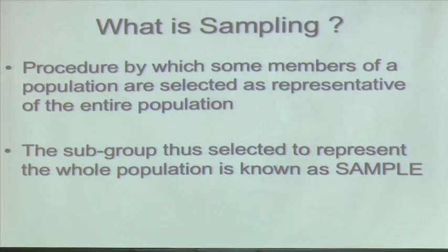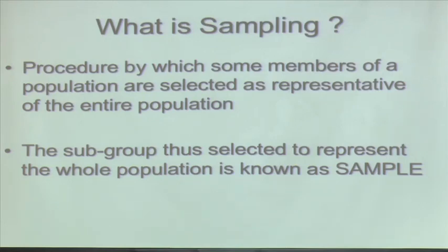Similarly, when you need 1 gram of sample through which you will do the analysis — to determine the grade of my ore — that is probably representing a population of 120 billion tons of reserve. That is the process called the sampling process. The subgroup selected to represent the whole population is known as the sample.